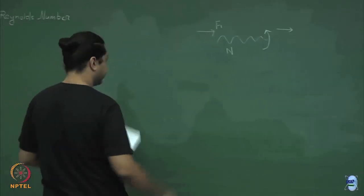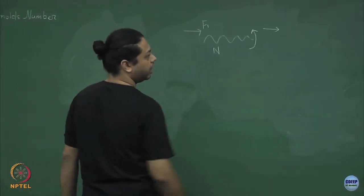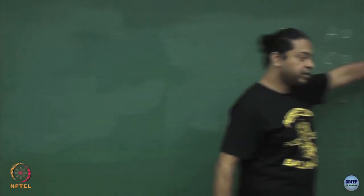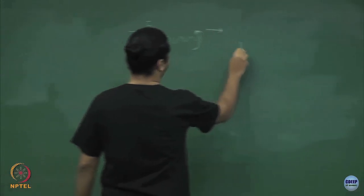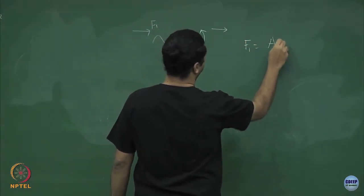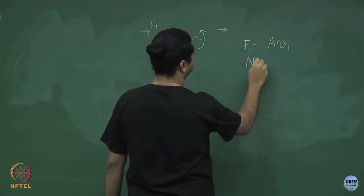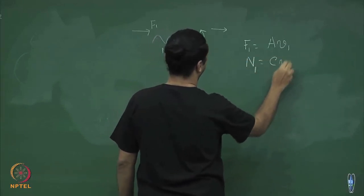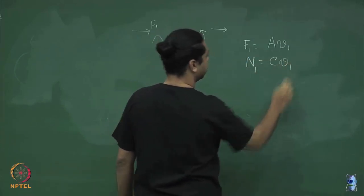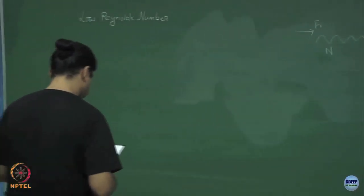Then he says: let me imagine I also apply an external torque — precisely the amount of torque necessary to stop this rotation. So after I have applied this force and this torque, this propeller only moves with a velocity and does not rotate. In that case, with angular velocity equal to zero, I get: f1 = a·v1 and N1 = c·v1.